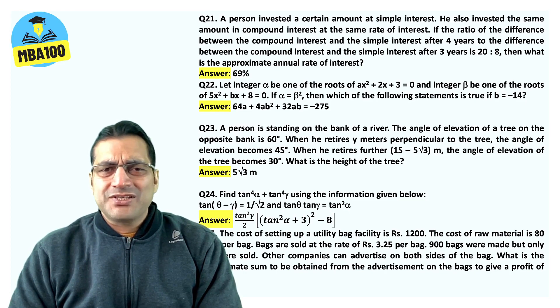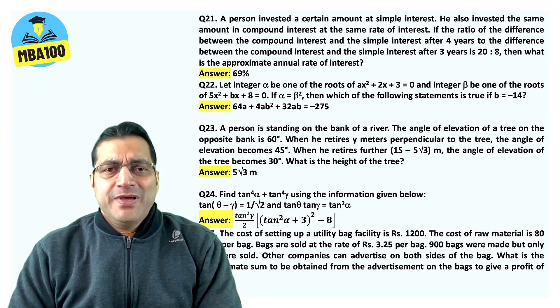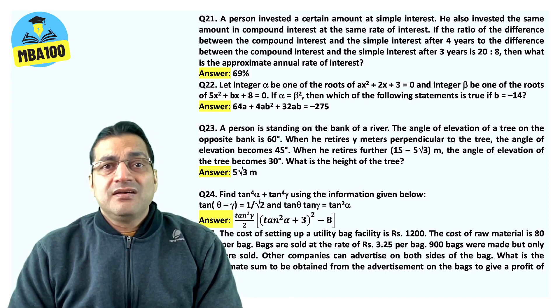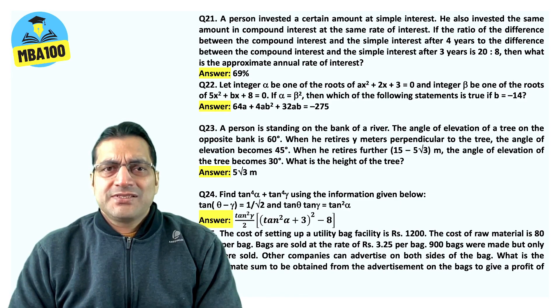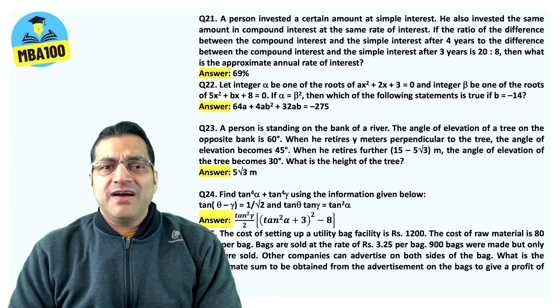Question number 22, usual stuff. 64A plus 4AB square plus 32AB is equal to minus 275 is the answer. A person is standing on the bank of a river. Absolutely nothing this question had, except some superfluous information. Answer 5 root 3 meter.